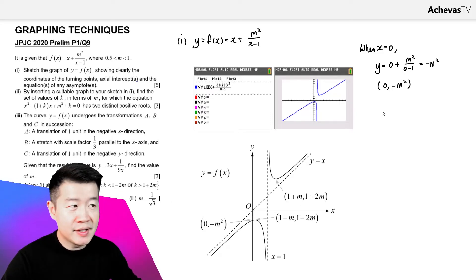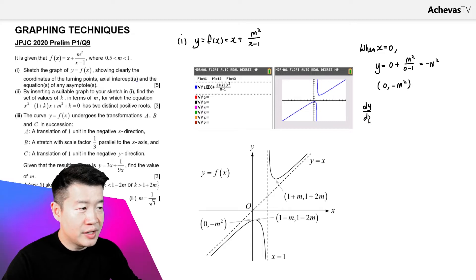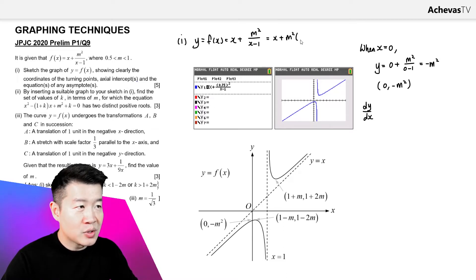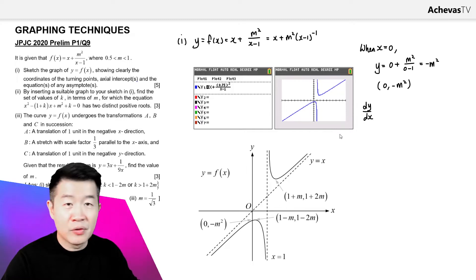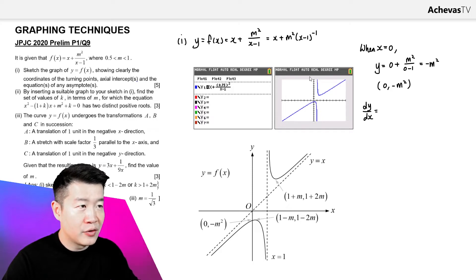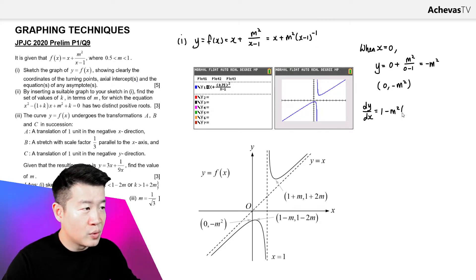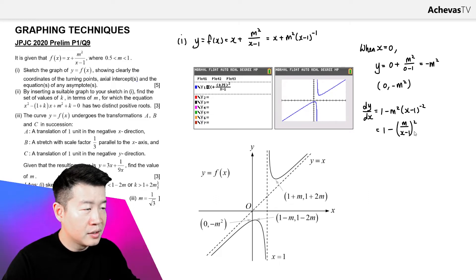For the stationary points, we use dy/dx. It is more convenient to rewrite f(x) as x + m²(x − 1)^(−1). Differentiating, the derivative of x is 1, and differentiating m²(x − 1)^(−1) gives −m²(x − 1)^(−2). So dy/dx = 1 − m²/(x − 1)².